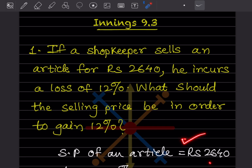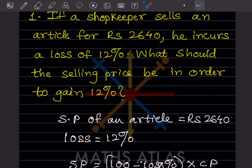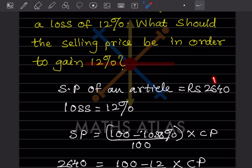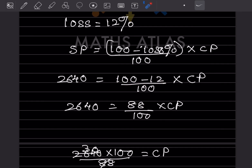The given information is: selling price of an article is ₹2640 and loss is 12%. Since there is a loss of 12%, the formula to use is: Selling Price = (100 − Loss%) ÷ 100 × CP. So SP is 2640, loss percent is 12, giving us (100 − 12) = 88.